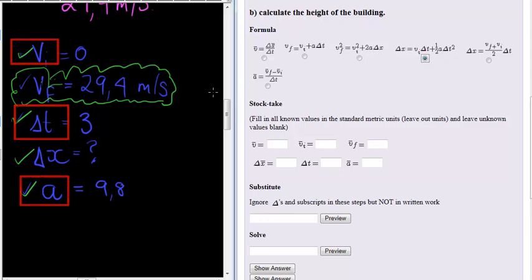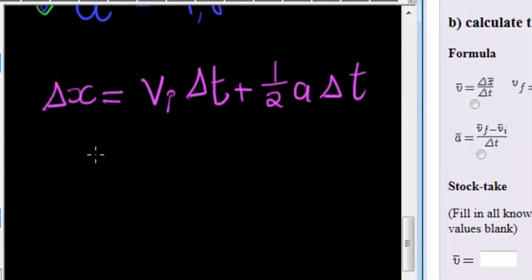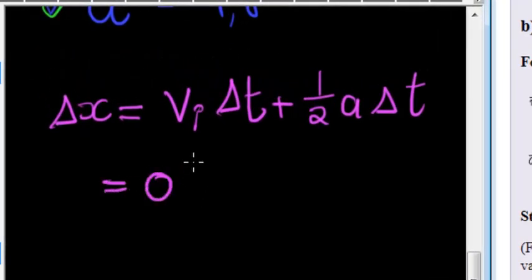Using that formula to do my substitution, I get that Delta X is equal to initial velocity times time, plus one-half a Delta T squared. Substituting in, we know initial velocity was zero since it was dropped, so that part will in any way just be vanquished by the zero.